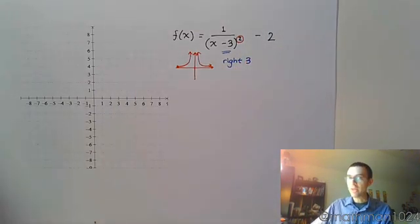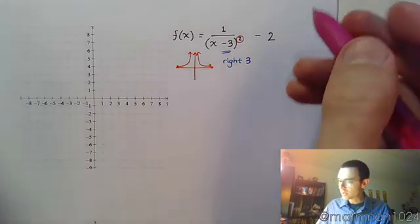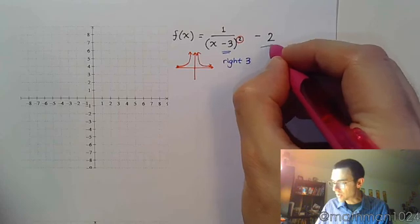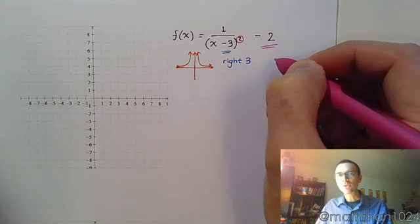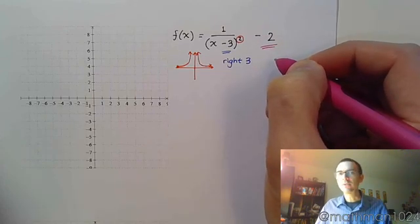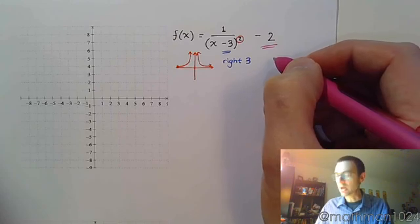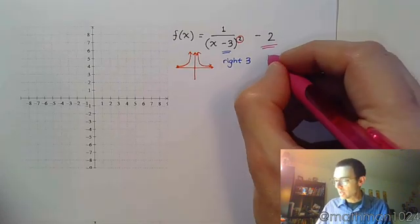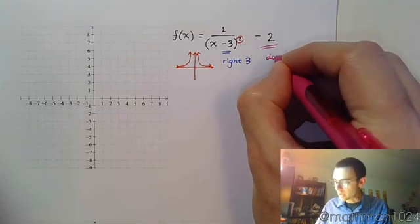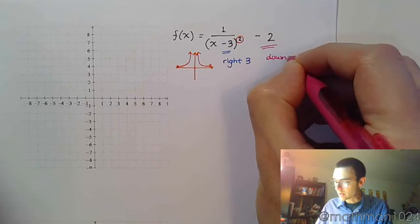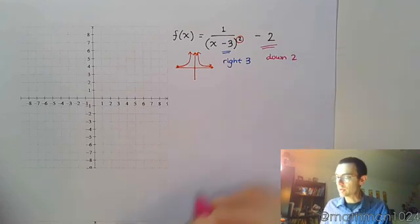And then there's a minus 2 outside. Outside is a vertical shift — exactly what you see. So I see a minus 2, which means vertically I'm going to go down two units.